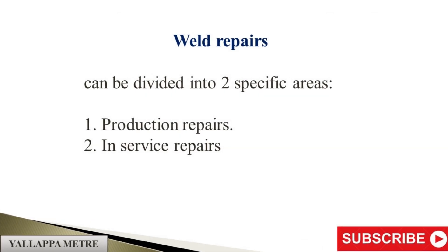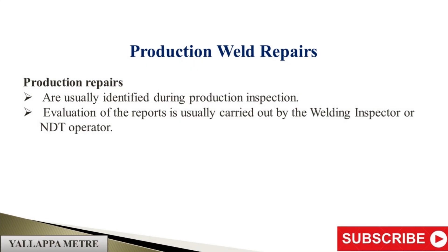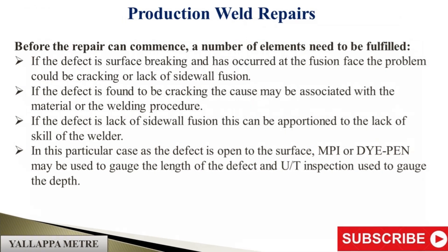Production Weld Repairs: Production repairs are usually identified during production inspection. Evaluation of the reports is usually carried out by the welding inspector or NDT operator. Before the repair can commence, a number of elements need to be fulfilled. If the defect is surface breaking and has occurred at the fusion face, the problem could be cracking or lack of sidewall fusion. If the defect is found to be cracking, the cause may be associated with the material or the welding procedure.